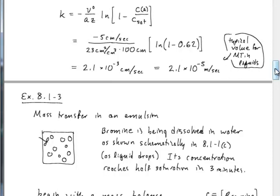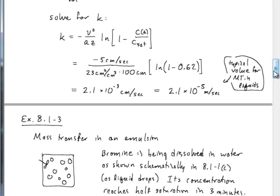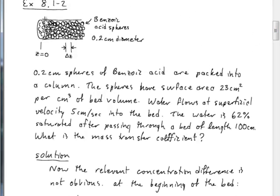What I want to do today is extend this result a bit and think about what if, instead of defining the relevant driving force as the local driving force, we instead looked at a log mean of the driving force at the beginning of the bed — the concentration at the surface of the particles minus the concentration in the bulk of the water flowing in, which would be c_sat minus 0 at this end — and a log mean with the concentration driving force at the other end of the bed, which would be c_sat minus 0.62 c_sat.